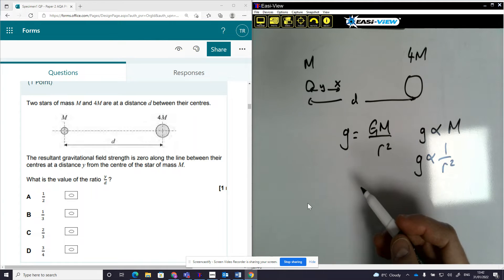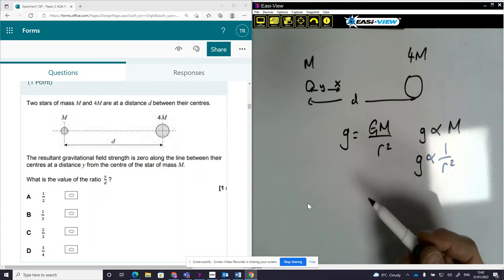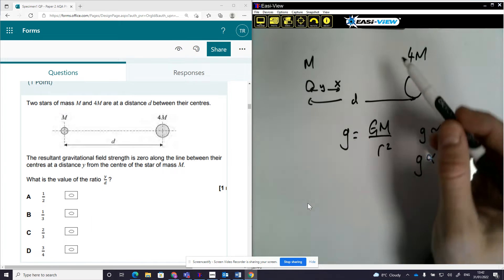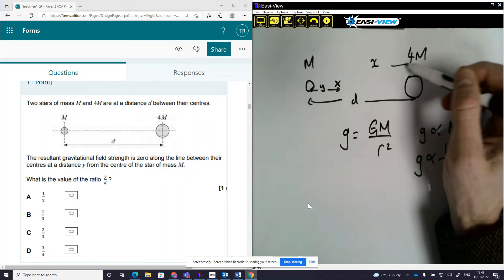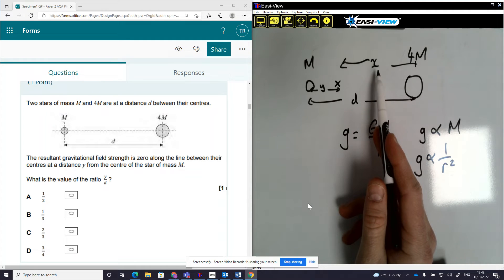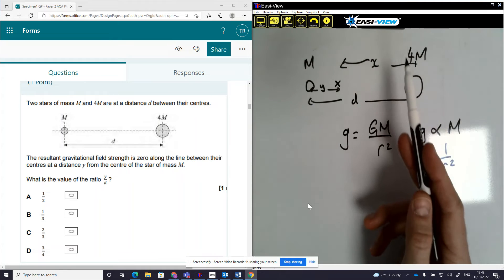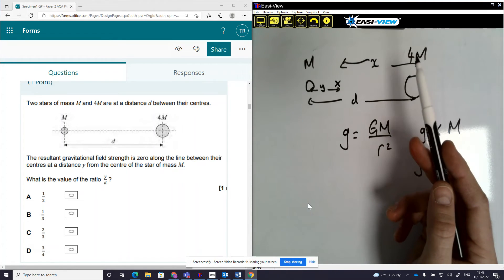Well, if it's twice the distance, then twice the distance squared will give us the same effect as having four times the mass. So the distance Y, if I call this X, the distance Y must be half of what X is to compensate for this multiple of mass being four times this.